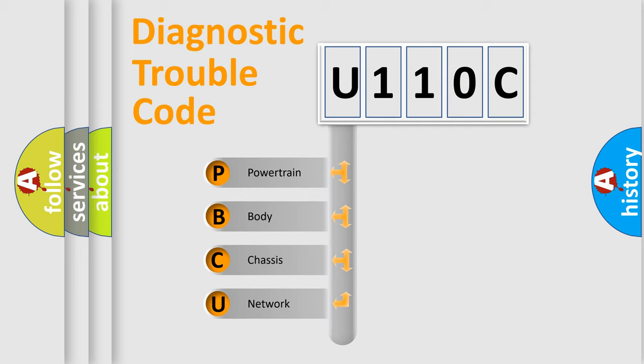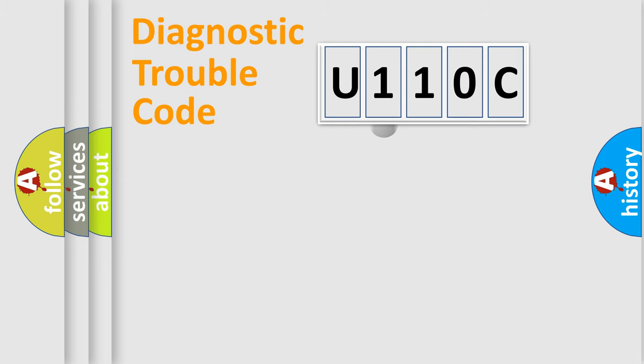We divide the electric system of automobile into four basic units: Powertrain, body, chassis, and network. This distribution is defined in the first character code.